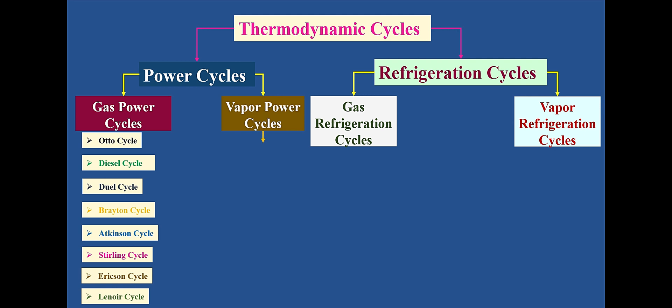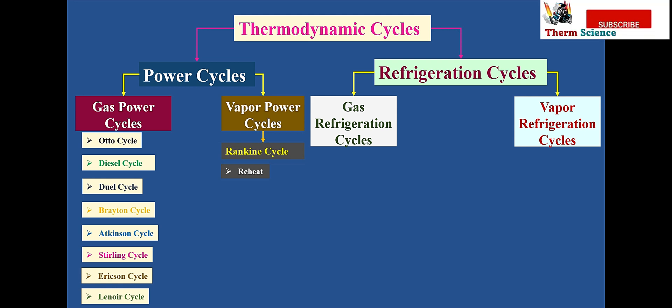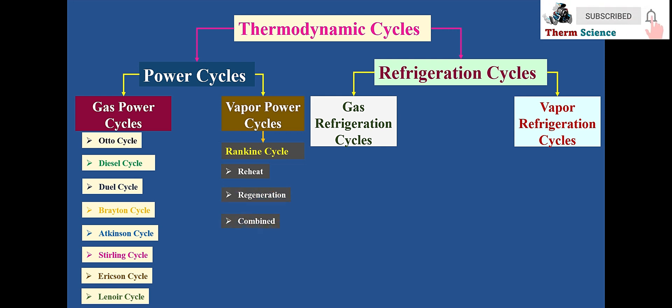Vapor power cycle is also called the Rankine cycle. To increase the efficiency of the Rankine cycle, based on the application, the following cycles are adopted: reheat Rankine cycle, regeneration Rankine cycle, and combined Rankine cycle.